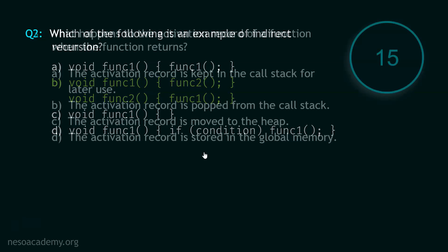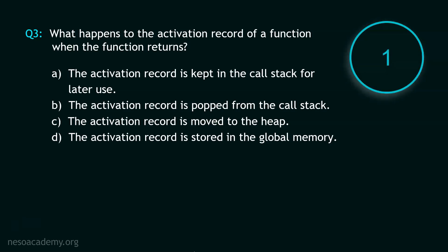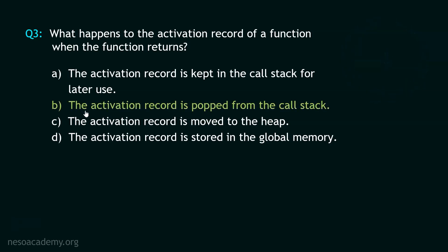Let's move to question number 3, and your time starts now. Stop. This one is easy. The correct option is option B. The activation record is popped from the call stack. Whenever a function returns, the activation record of that function is popped from the call stack. Now let's move to question number 4.